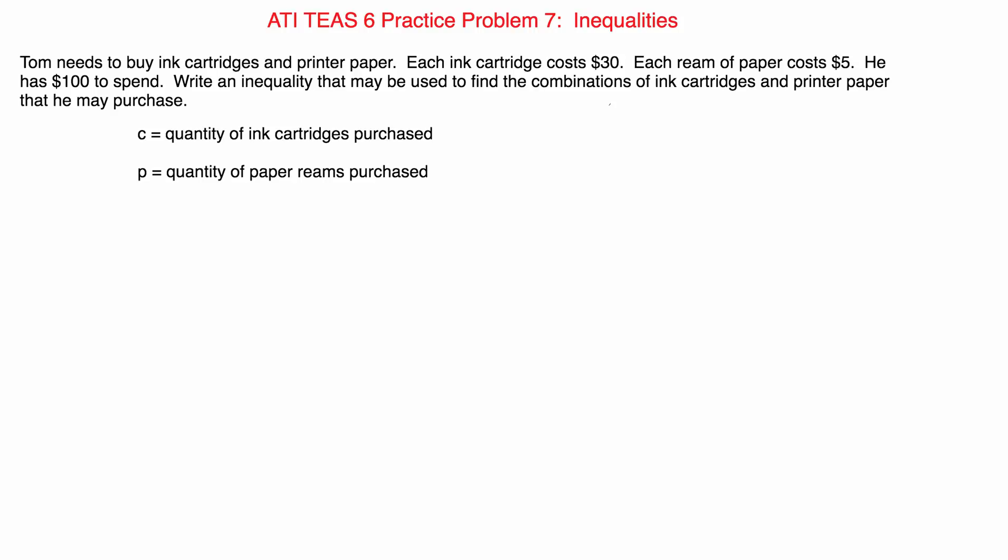Well, first of all, if we're going to set up an inequality, we have to set up our unknowns because every inequality or equation has variables. In this case, we will set C, the variable C, to represent the quantity of ink cartridges purchased by Tom, and P will be the variable to represent the number of paper reams purchased by Tom.